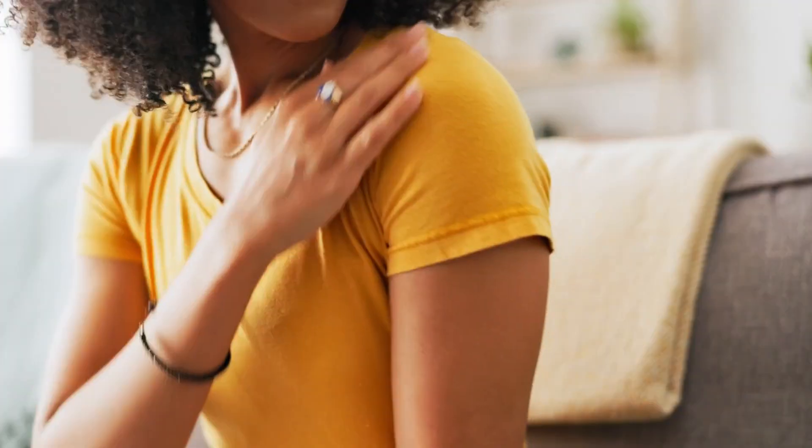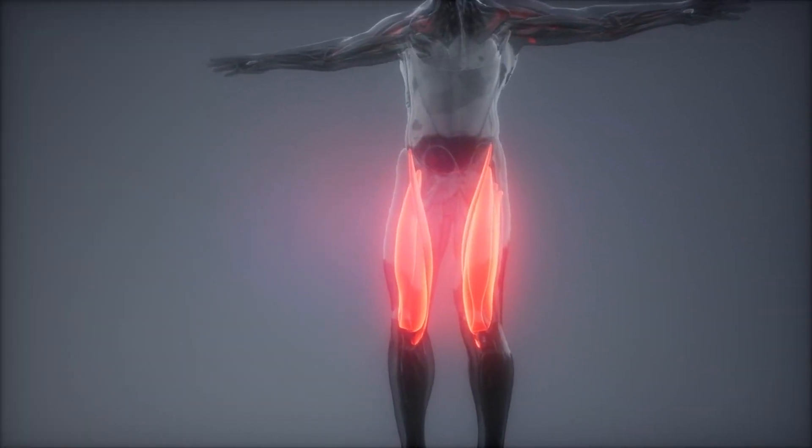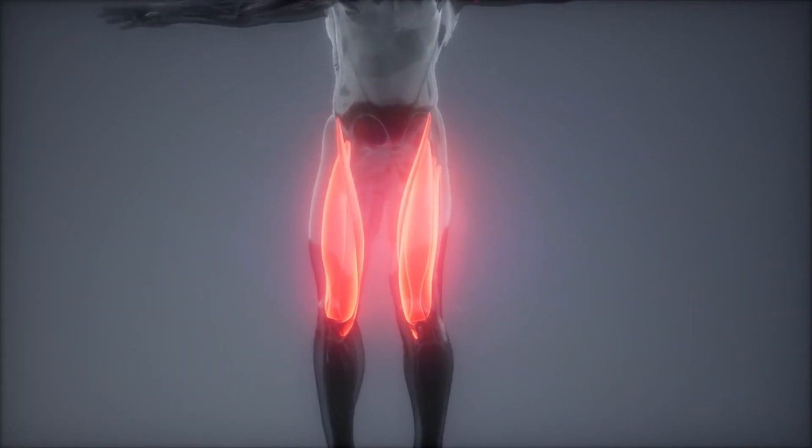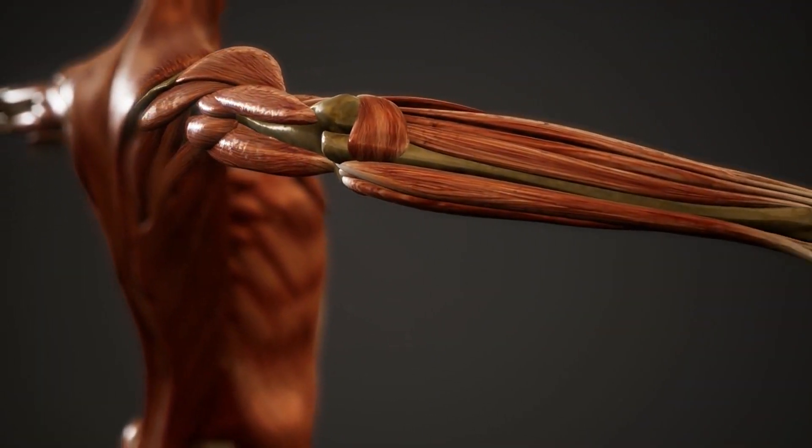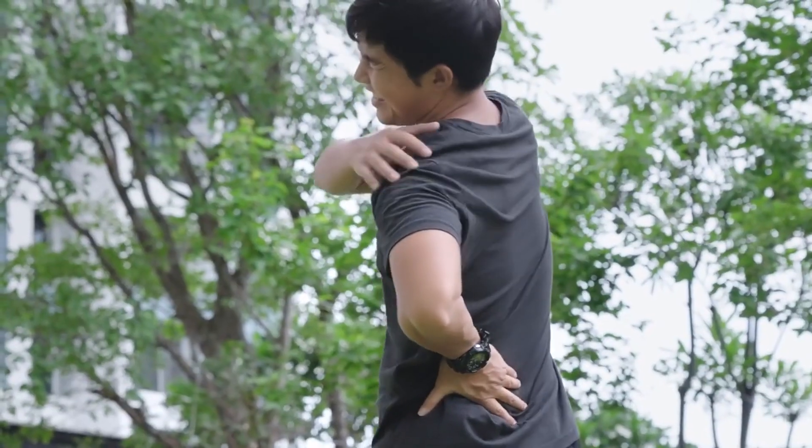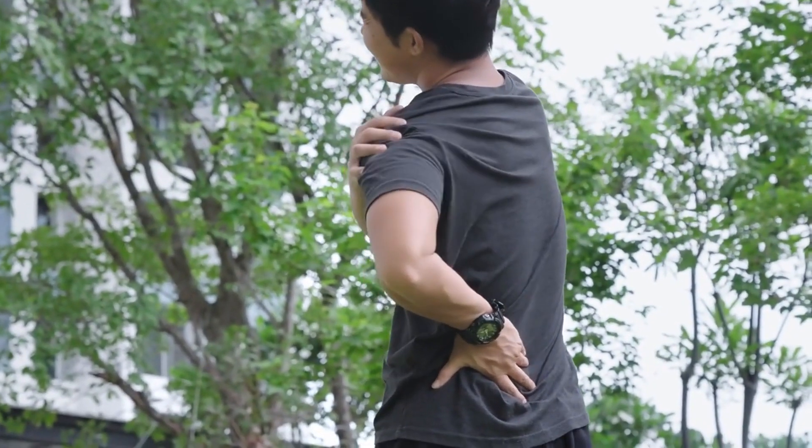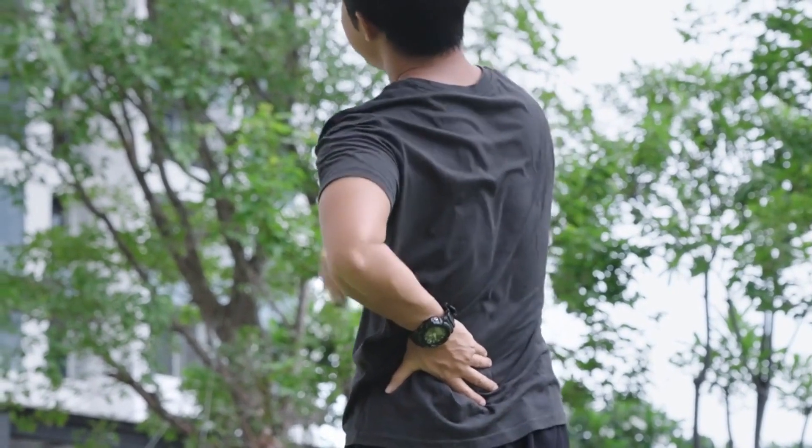Say hello to cramps. Ah, the dreaded muscle cramps. Dehydration is the sneakiest culprit. Your muscles are screaming for water, and when you ignore them, they start throwing a temper tantrum. Ouch. Imagine your muscles as the unsung heroes of your body silently working behind the scenes. But oh, when dehydration knocks on the door, those heroes turn into drama queens. Cue the muscle cramps.